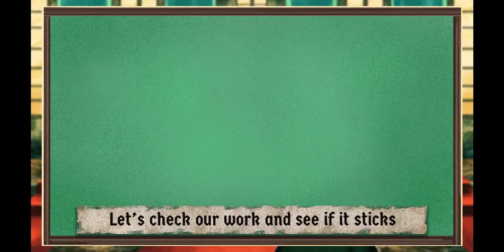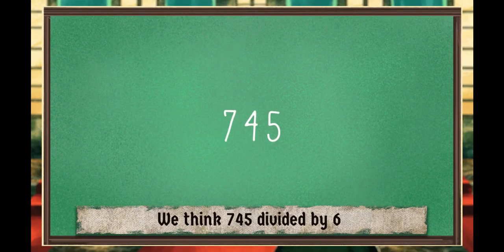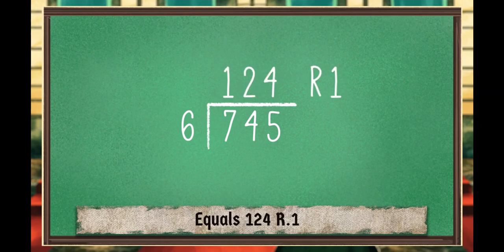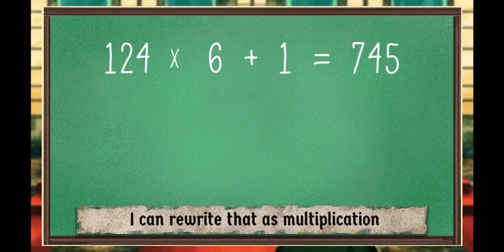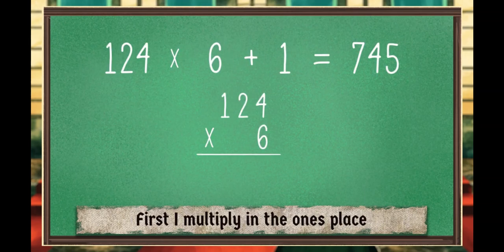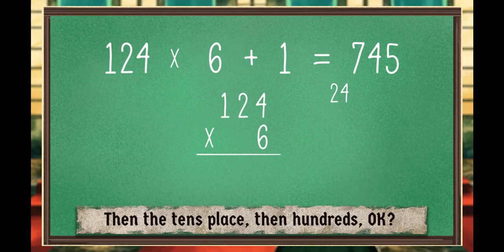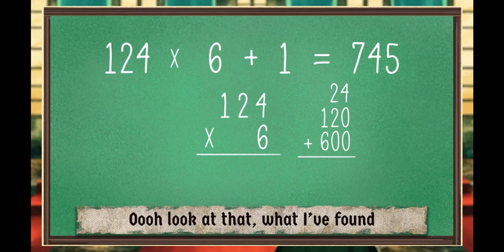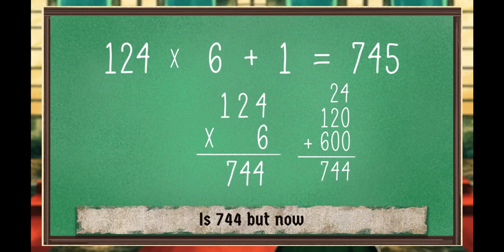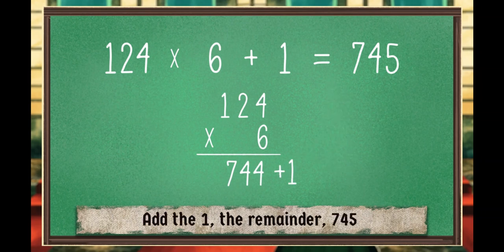Let's check our work and see if it sticks. We think 745 divided by 6 equals 124, remainder 1. I could rewrite that as multiplication. First I multiply in the ones place, then the tens place, then hundreds, okay? Ooh, look at that, what I found, it's 744. But now add the 1, the remainder, 745.